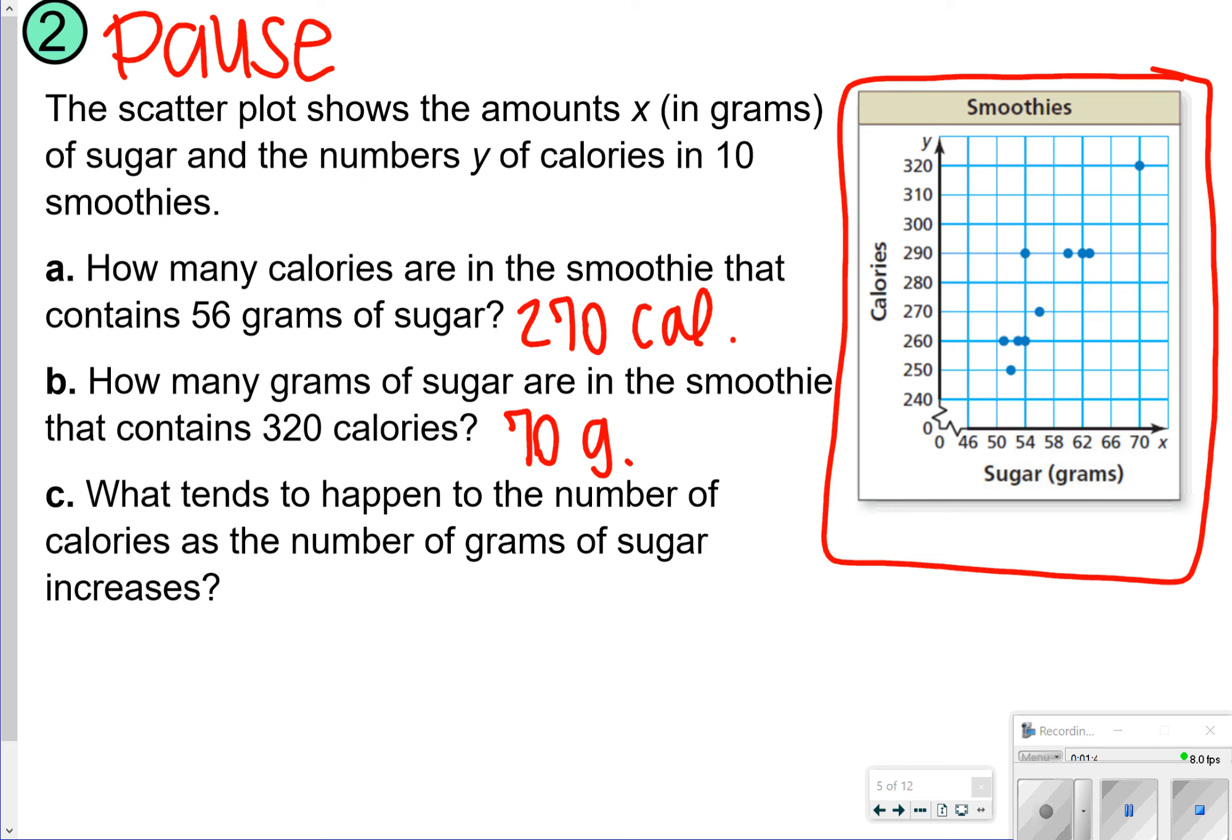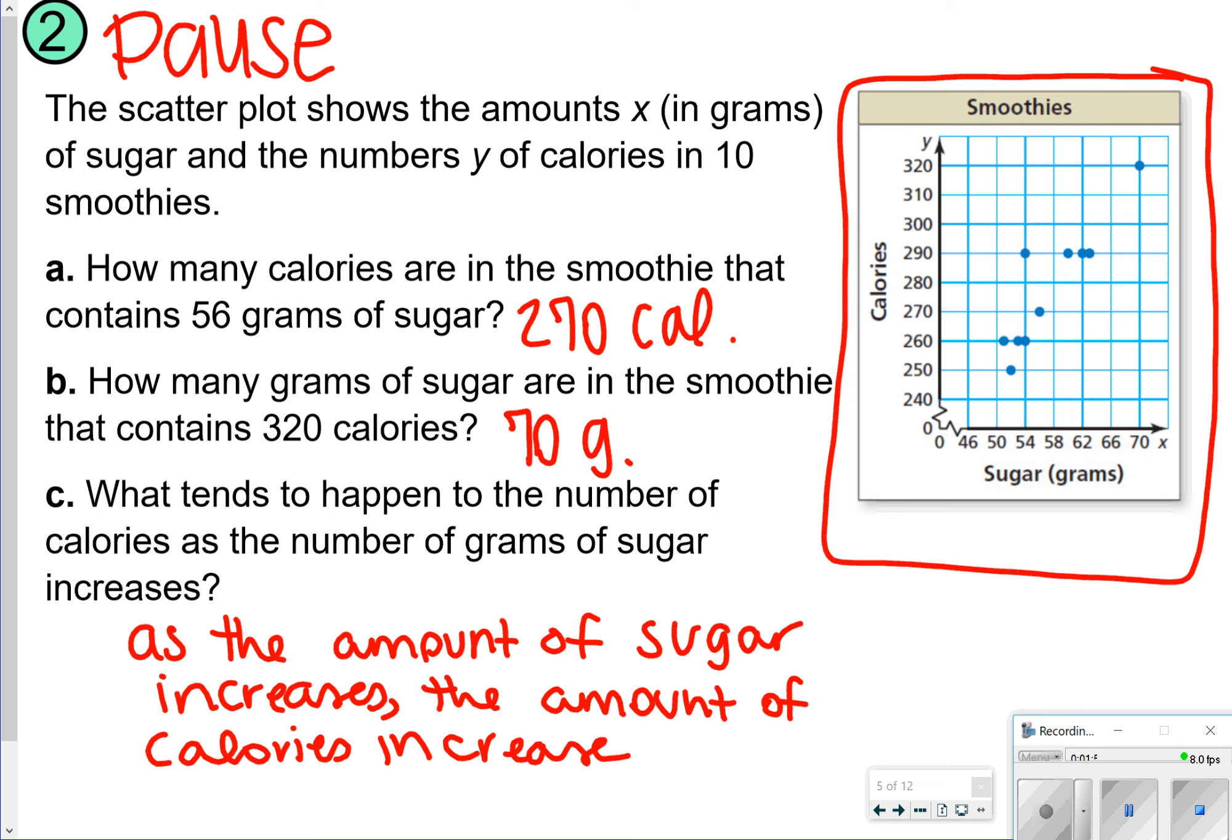The last one says what tends to happen to the number of calories as the number of grams of sugar increases? What we see here, as the amount of sugar increases, the amount of calories will also increase too. So this is what we would call a positive correlation. The higher you go up on the x-axis, the higher you go up on the y-axis.